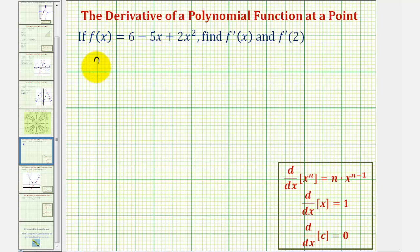So f prime of x will be equal to the derivative of 6, which would be equal to 0. The derivative of any constant is always 0, minus 5 times the derivative of x, which would just be 1, plus 2 times the derivative of x squared, which would be 2 times x to the power of 2 minus 1, or x to the first. So times 2x to the first.